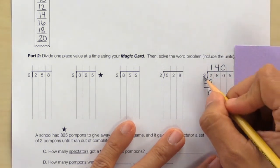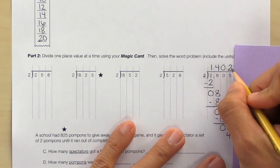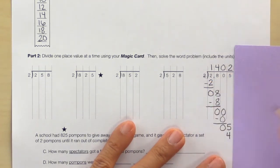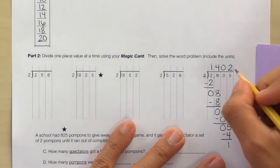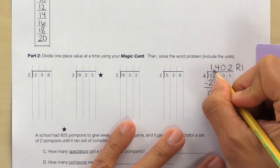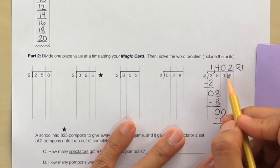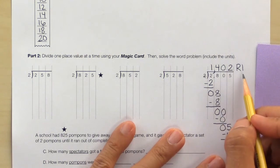If 4 divided by 2 equals 2, then 2 times 2 equals 4. True. Slide over. That's the end of the problem. Our final answer is 1,402 remainder 1.